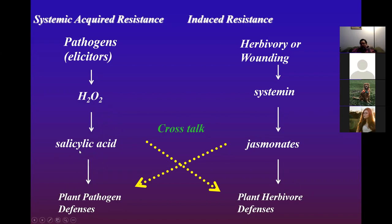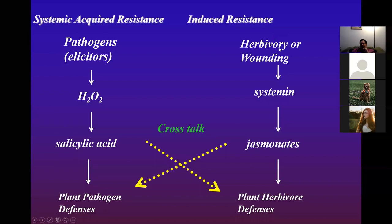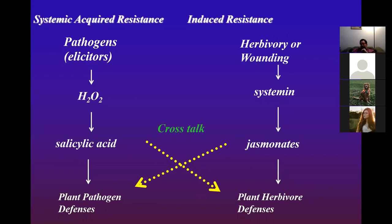We sometimes call salicylic acid SA for short, or salicylate. Some of the plant pathogen defenses that are turned on include chitinases and pathogenesis-related proteins. The induced resistance pathway tends to be more effective against chewing insects — grasshoppers, caterpillars, and so forth.